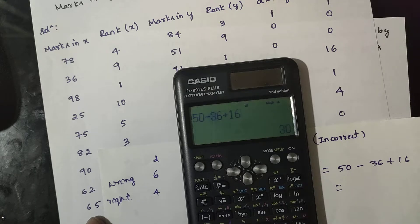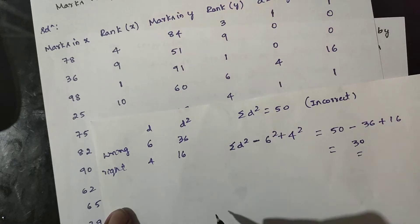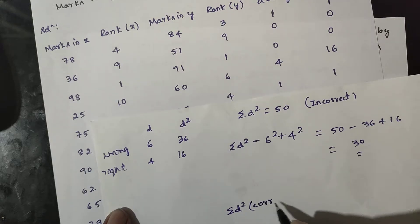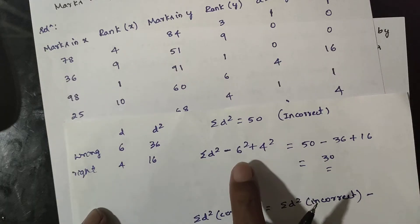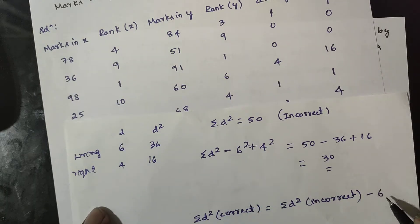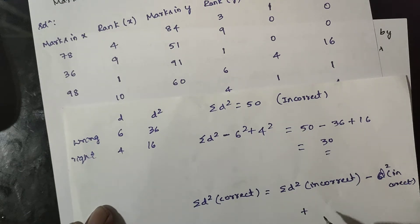The answer gives the correct summation. The right d² is 100. The correct summation of d² is obtained by subtracting the incorrect d² and adding the correct d².